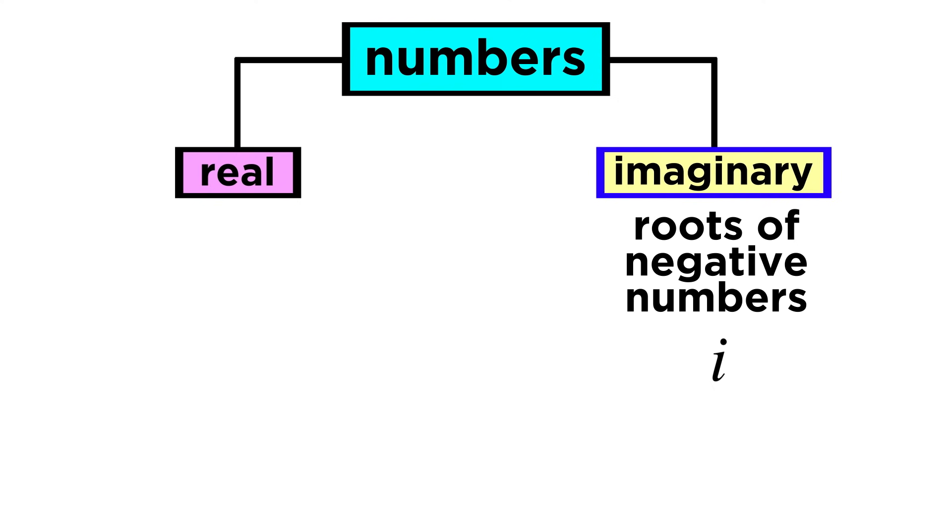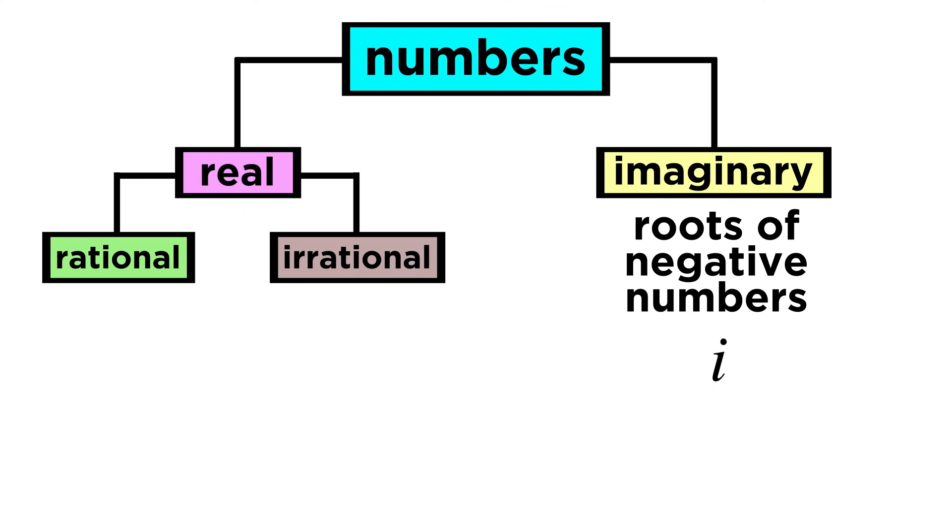That covers imaginary numbers, so let's go back to the real numbers. Within the category of real numbers, there are two subcategories, rational and irrational.